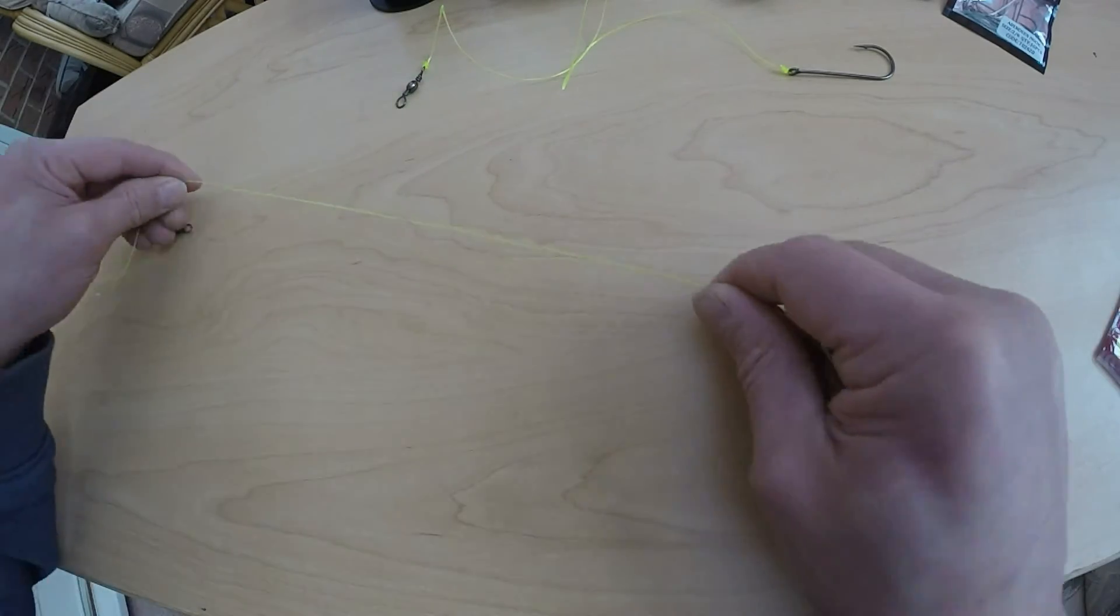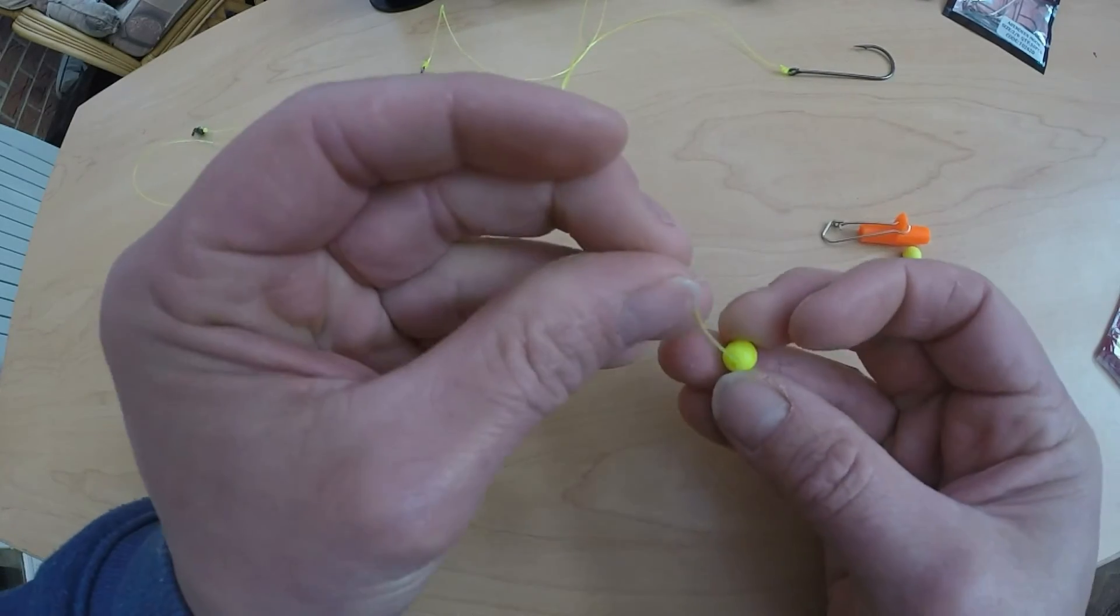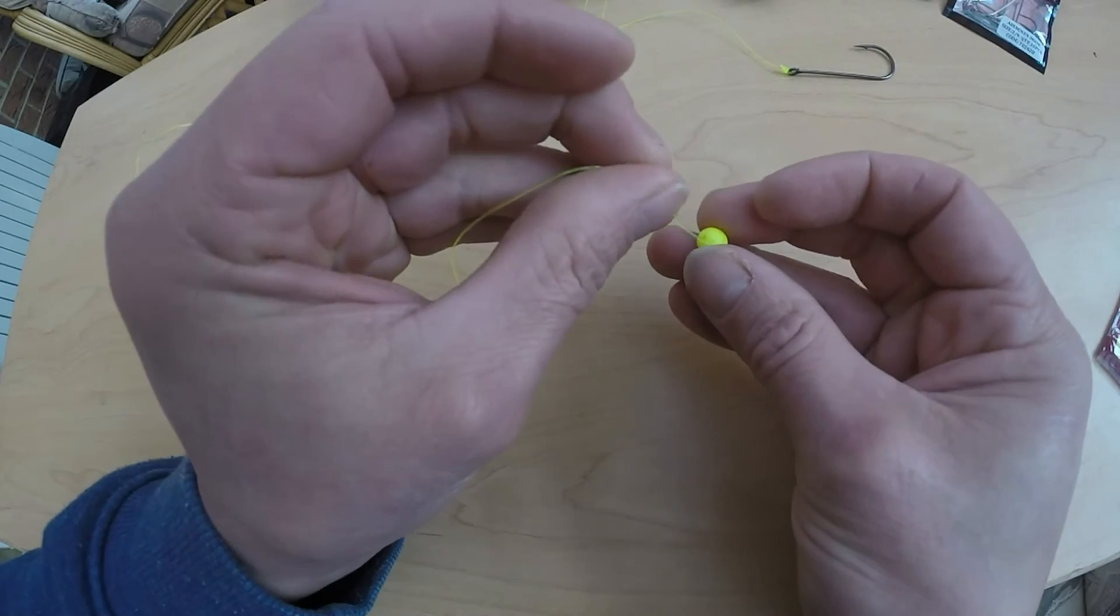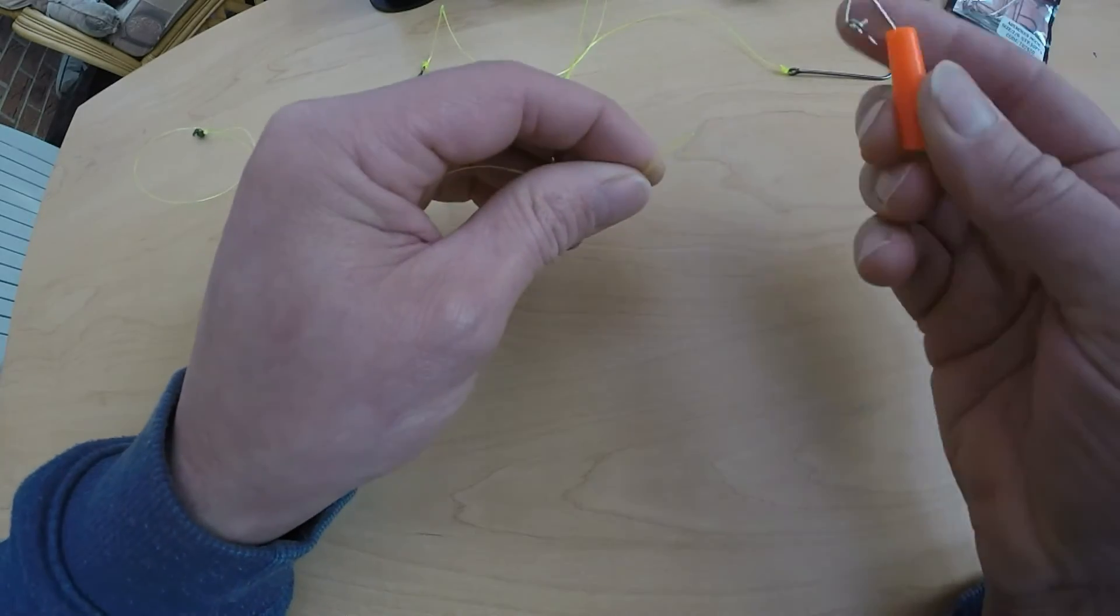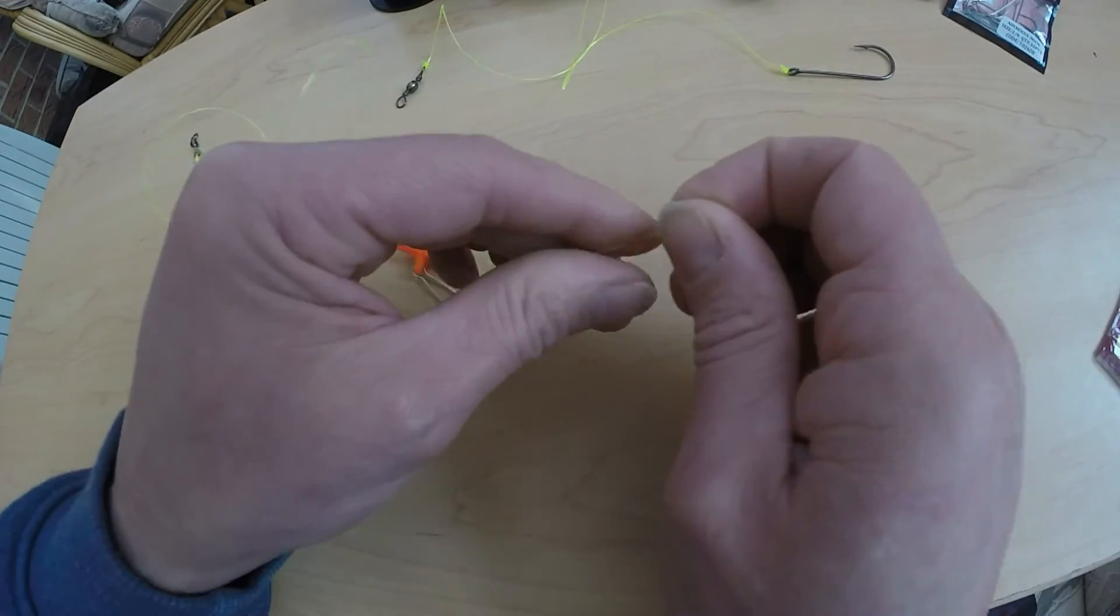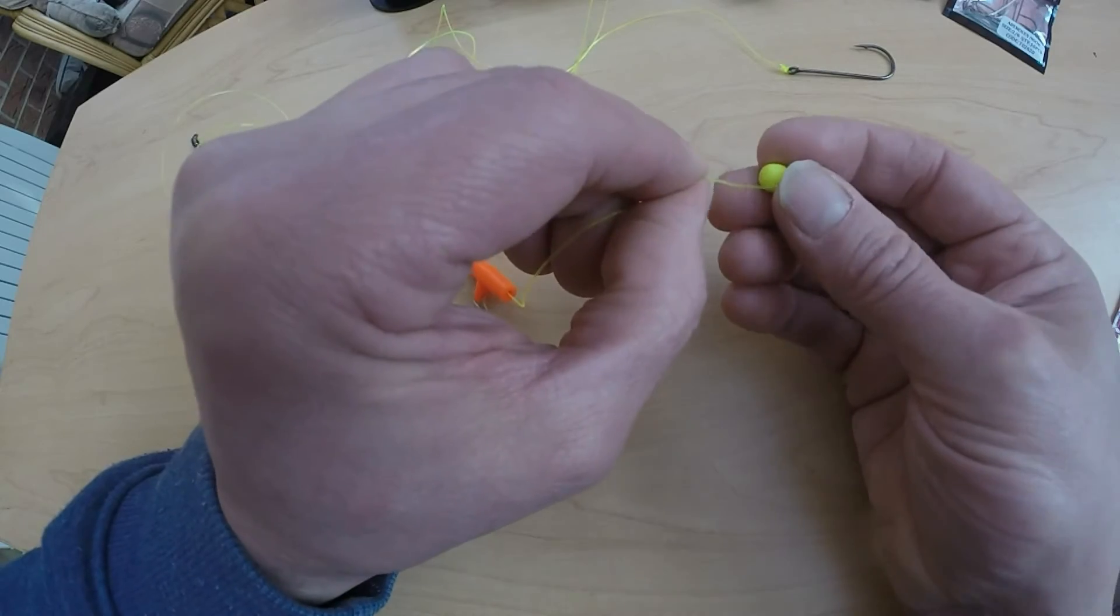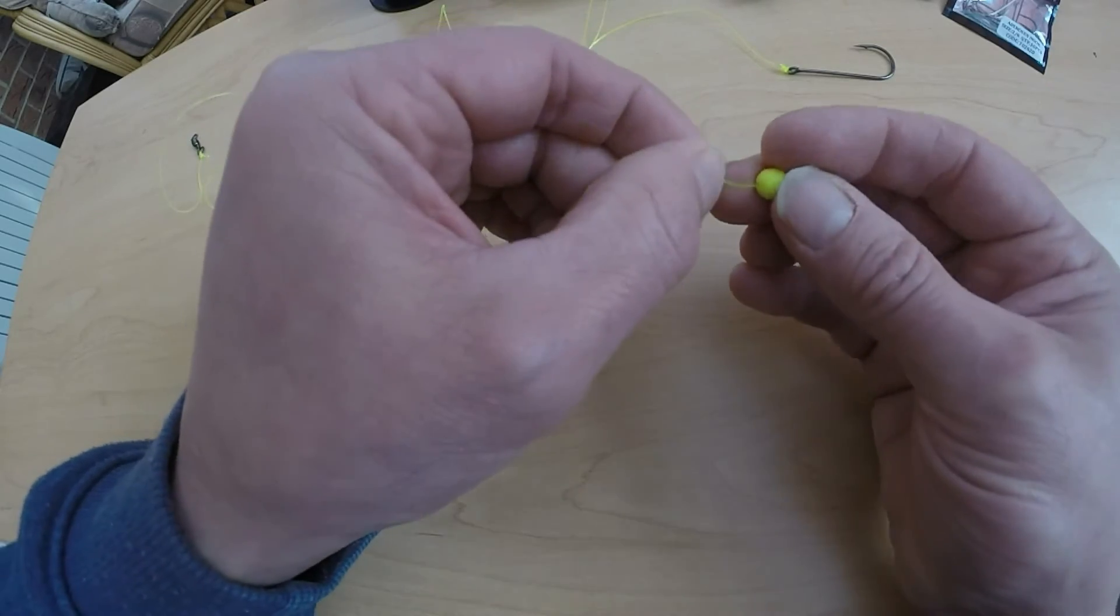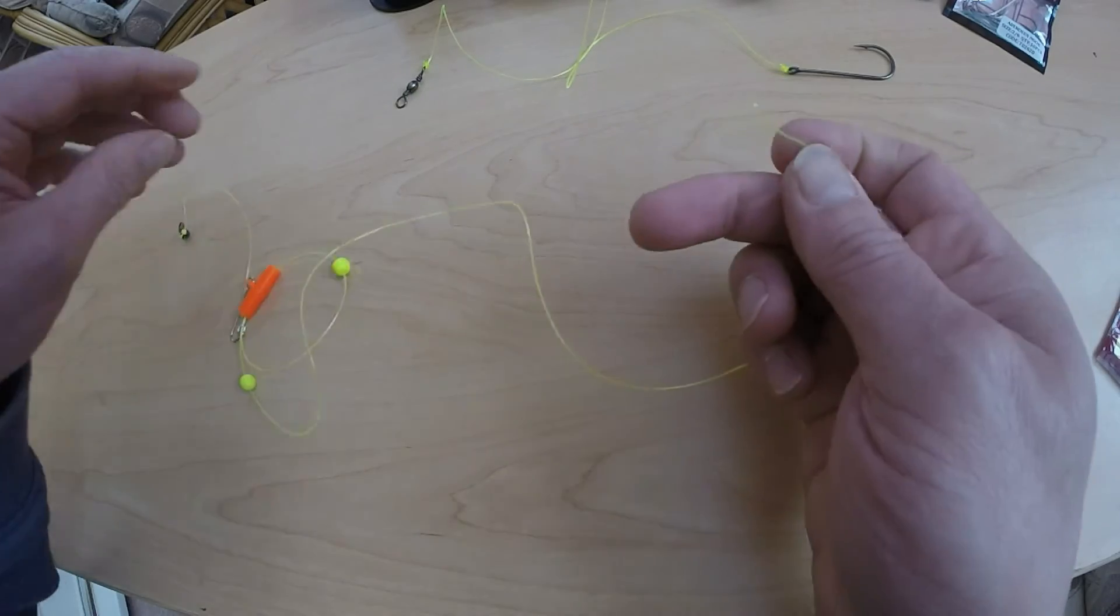So now we need to feed on the beads, which I have here. Let's feed the beads on, then the sliding boom, that needs feeding on, and then another bead. The beads act as a cushion against the knots when the weight slides up and down.